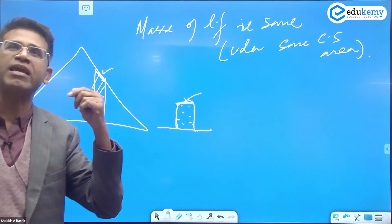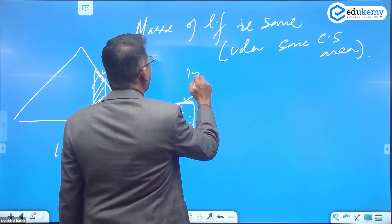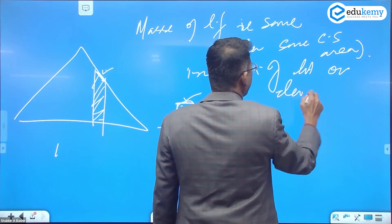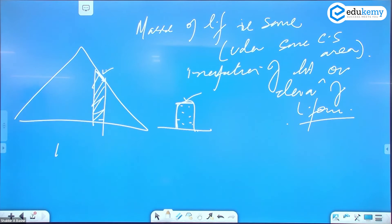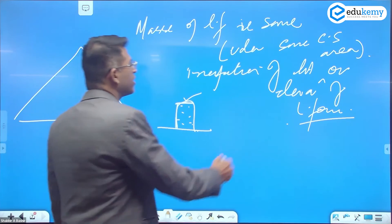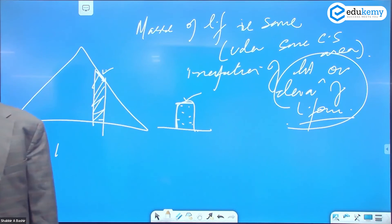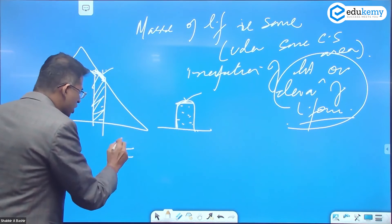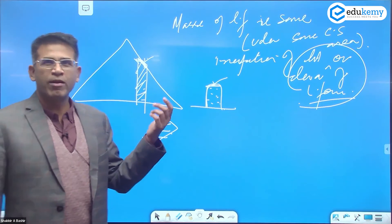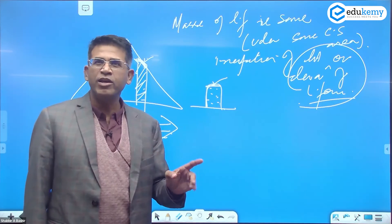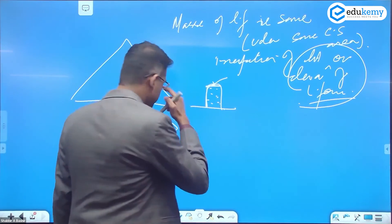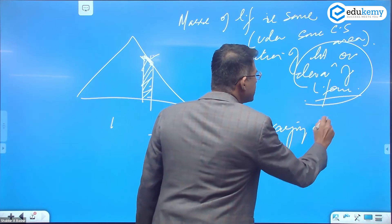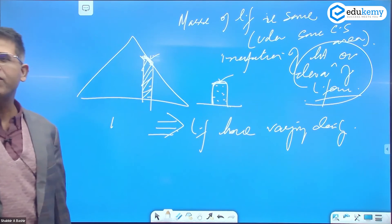Masses of landforms are the same under the same cross-section area, irrespective of the height or elevation of the landform. If the cross-sections are the same, the masses will be the same. Since mass is the same but elevations vary, this essentially means that landforms have a varying density.